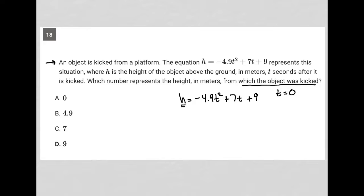So if t = 0, this entire term here is 0, and this is also 0, which means all we'd have left is 9. So it must have been a height of 9 when t = 0. Choice D is the correct answer.